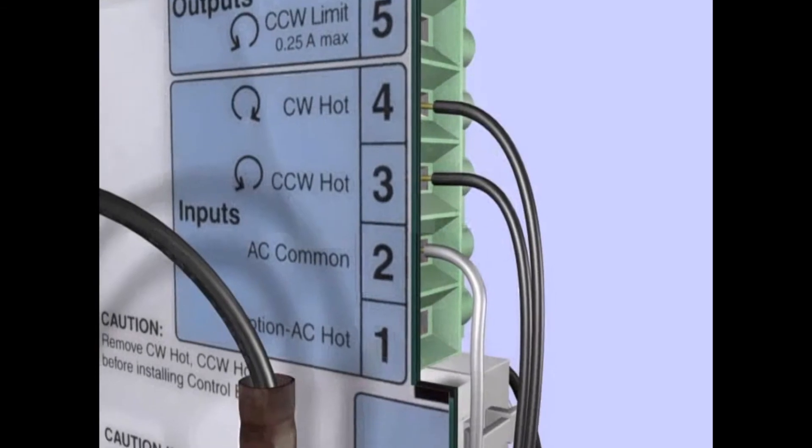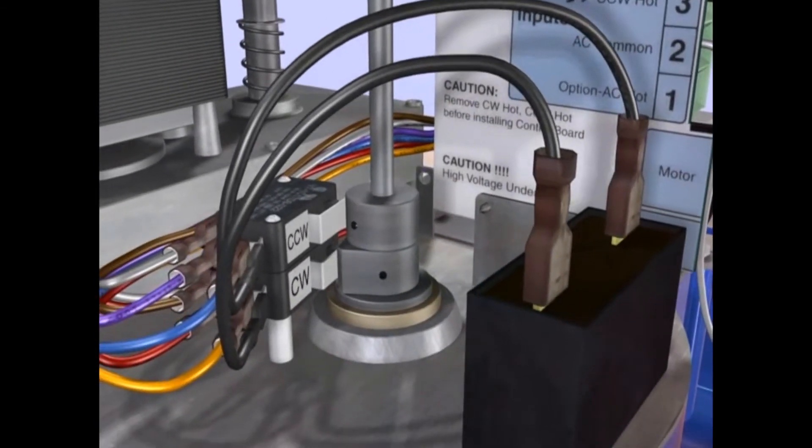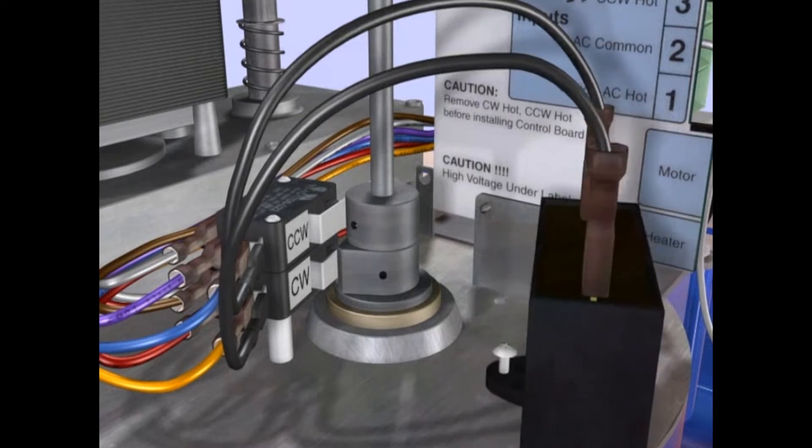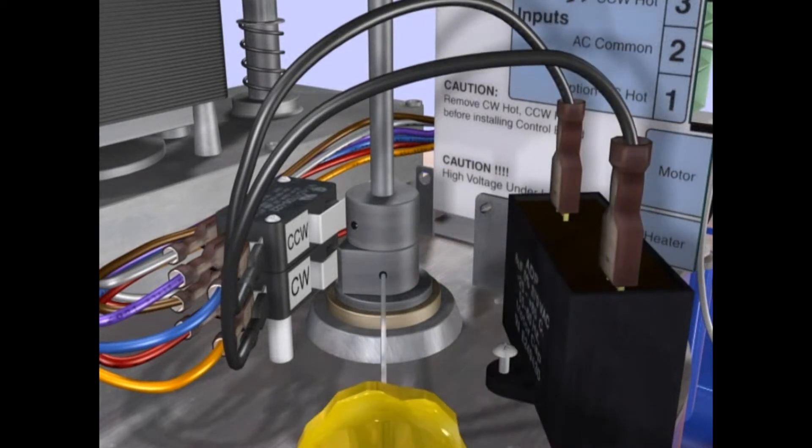First, loosen the set screw in the clockwise cam. The capacitor mounting screw may be loosened and the capacitor moved out of the way to gain better access.